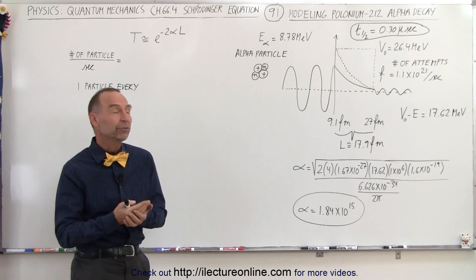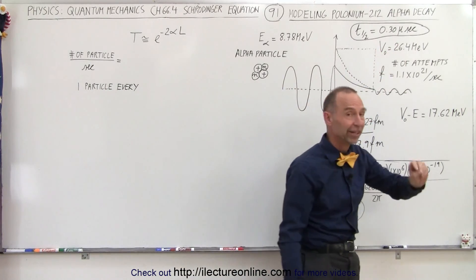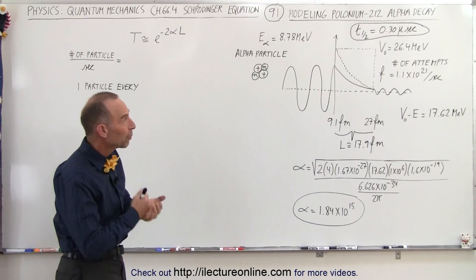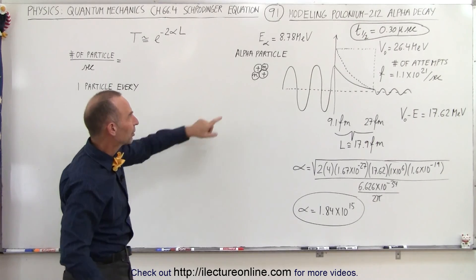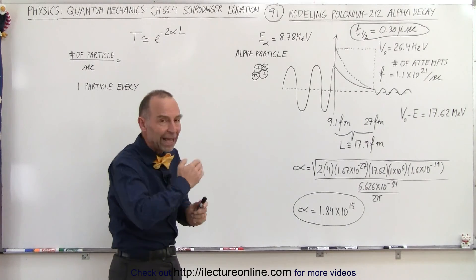We're going to take polonium-212, which by the way has a half-life of 0.3 microseconds. It's a very short half-life, therefore it's very radioactive, but we're going to try to model the attempt of the particle, in this case an alpha particle, leaving the nucleus, and so it has to go through what we call a potential barrier.